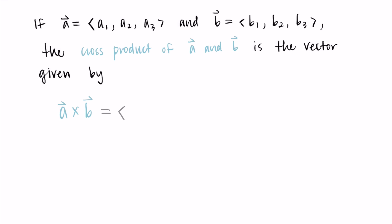It's equal to a vector where the x component is A₂B₃ minus A₃B₂. The second component is A₃B₁ minus A₁B₃. And the third component is A₁B₂ minus A₂B₁.